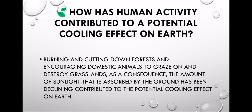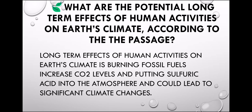Burning and cutting down forests, and engaging domestic animals to graze on and destroy grassland — as a consequence, the amount of sunlight that is absorbed by the ground has been declining, contributing to the potential cooling effect on Earth. Deforestation and domestic animals affecting grassland reduce sunlight absorption, and therefore the sunlight will decrease, causing a cooling effect on Earth's climate.